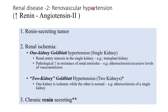Renal vascular hypertension means the initial insult is something wrong with the vasculature of the kidney — not the parenchyma originally. Something became wrong in the vascular supply to the kidney. Renal vascular causes are one of the main causes of kidney-induced secondary hypertension, and this is where the renin-angiotensin 2 axis comes into play.